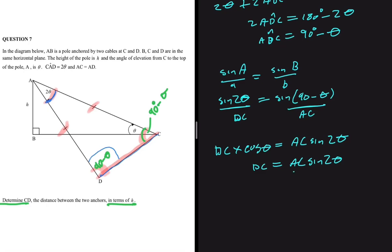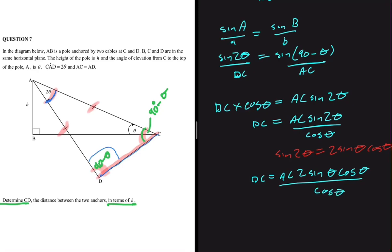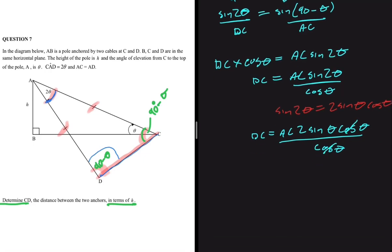So DC equals AC·sine(2θ) divided by cos θ. From trigonometry, sine of 2θ equals 2·sinθ·cosθ, so substituting that in, the cos θ terms cancel out, and we get DC equals 2·AC·sinθ.